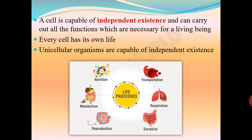A single cell is capable of independent existence. A cell carries out nutrition, respiration, excretion, transportation, reproduction — all life processes. Every cell has its own life. All organisms start life as a single cell; we human beings too start our life as a single cell. Old and weak cells are continuously replaced by new cells. Unicellular organisms are also capable of independent existence since every cell has its own life. The egg of a hen is the best example of a cell which can be seen with the naked eye.